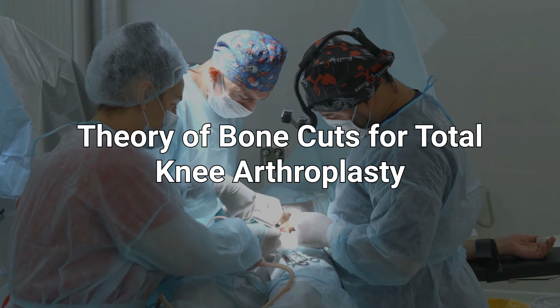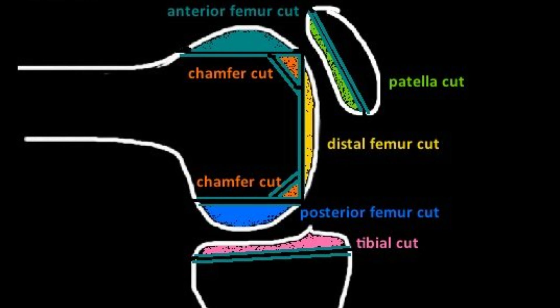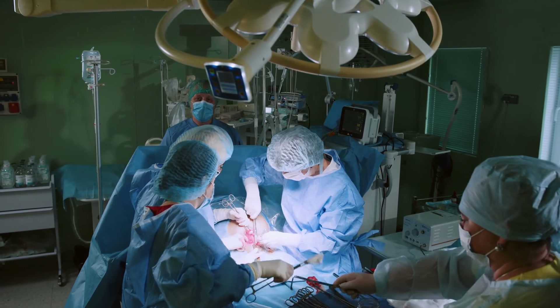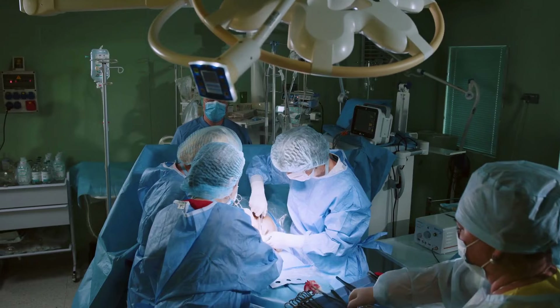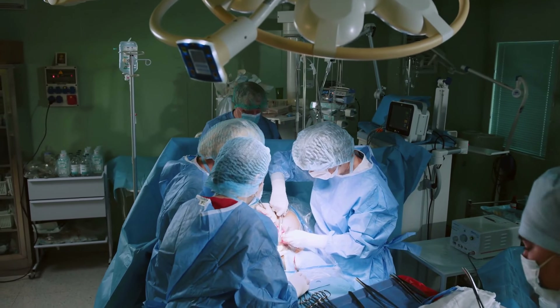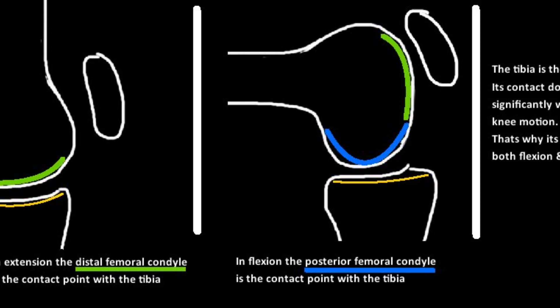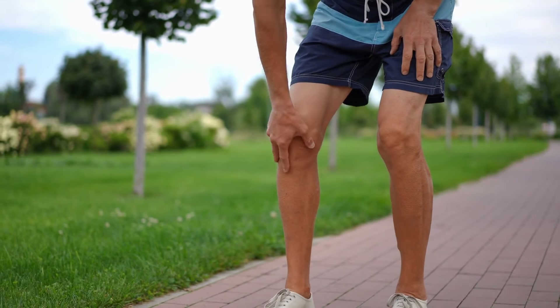We now apply the understanding of knee alignment to make our bone cuts. In this discussion, we will explain the goal of each cut in the simplest manner, using the measured resection technique of making bone cuts to achieve mechanical alignment. There is also a gap balancing technique to bone cuts, and the difference is discussed here.